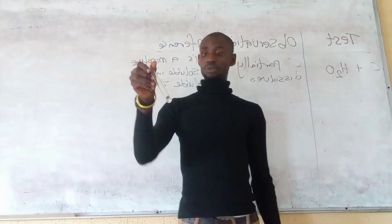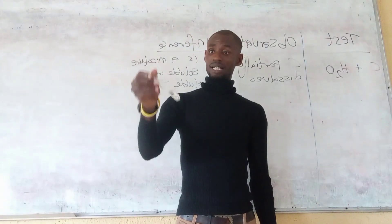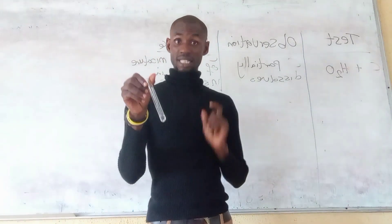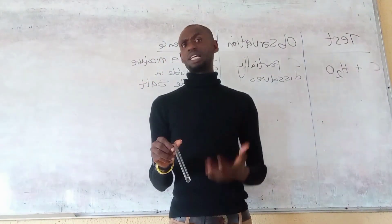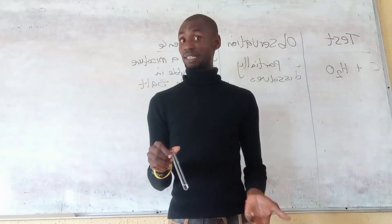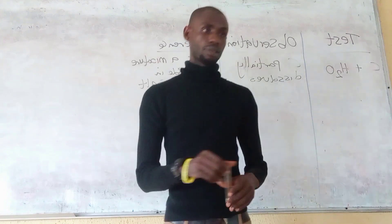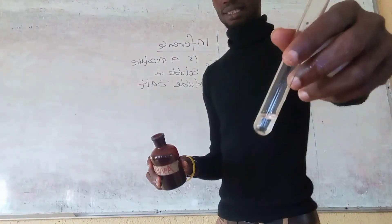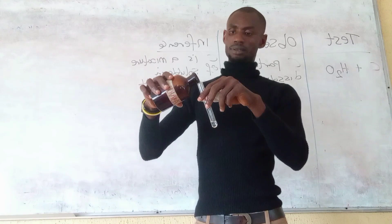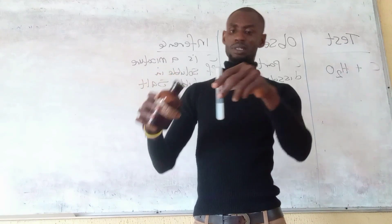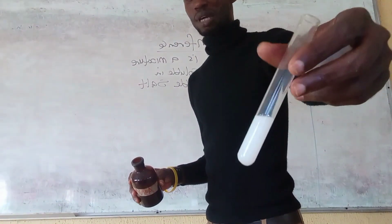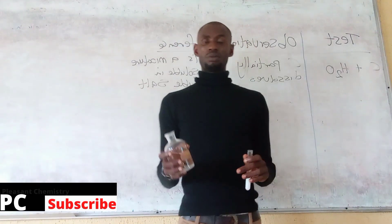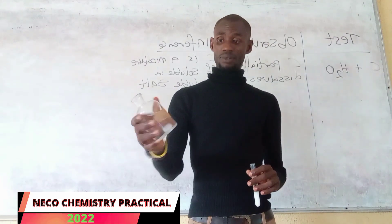Now for the filtrate — this is my filtrate. When carrying out the test on the filtrate, I want to add silver nitrate. Remember, when you add silver nitrate, you are testing for the chloride ion. If you look at the solution, it is colorless. When I add silver nitrate, we get a white precipitate, followed by the addition of dilute nitric acid (HNO3).